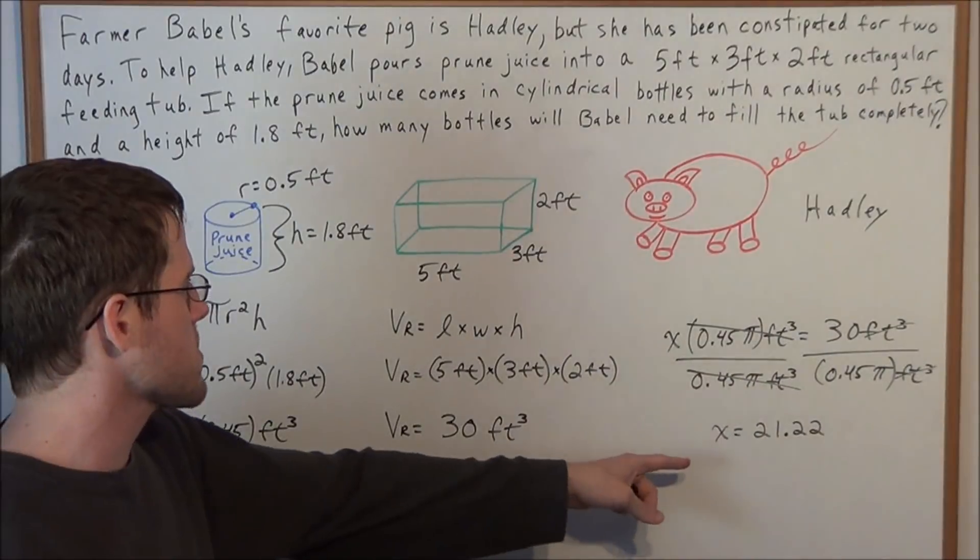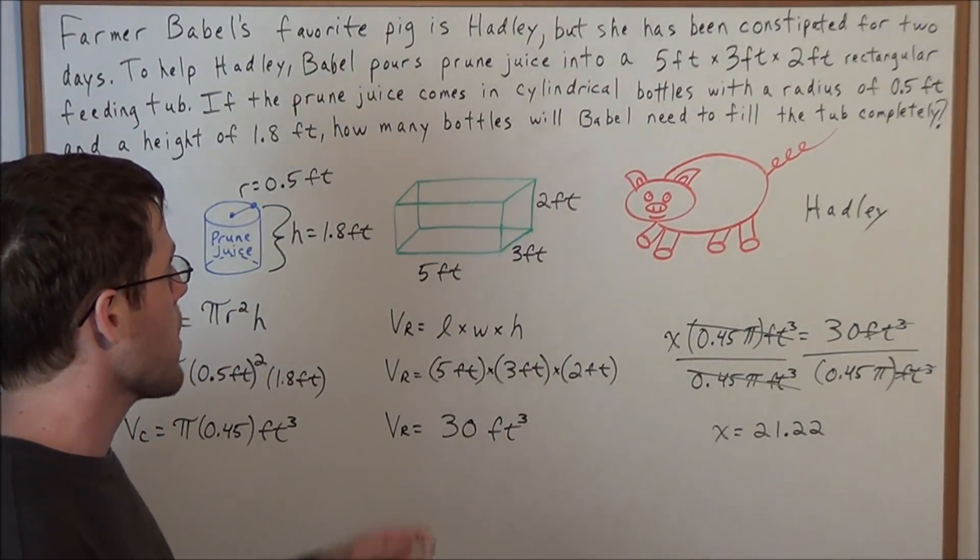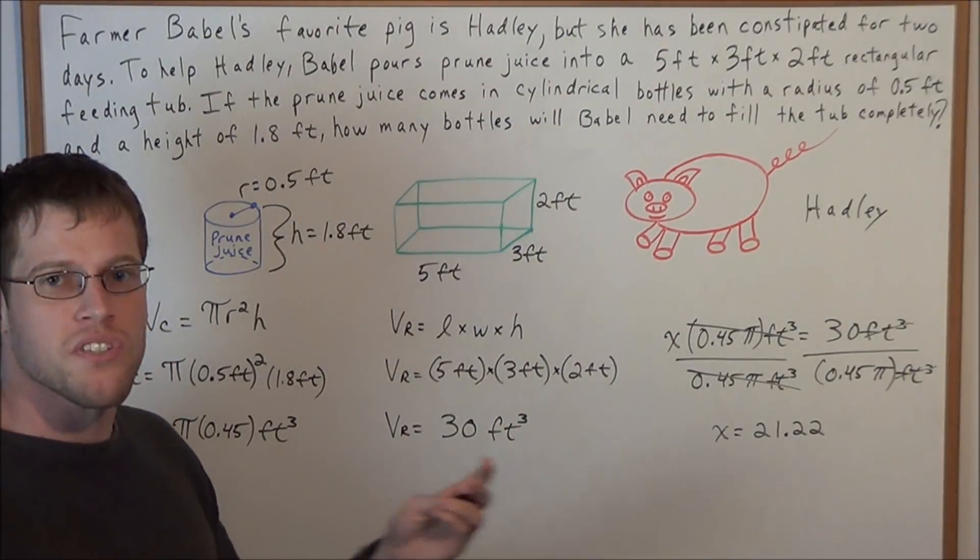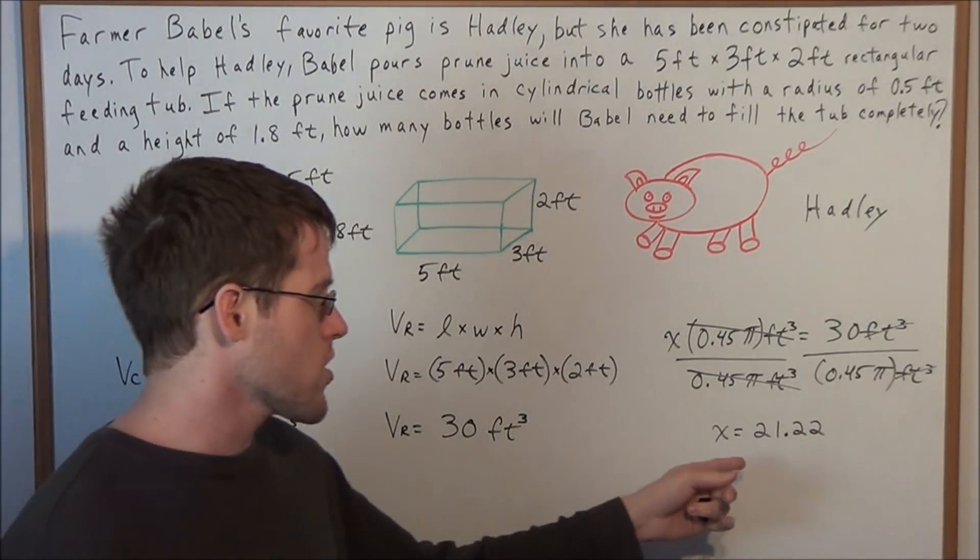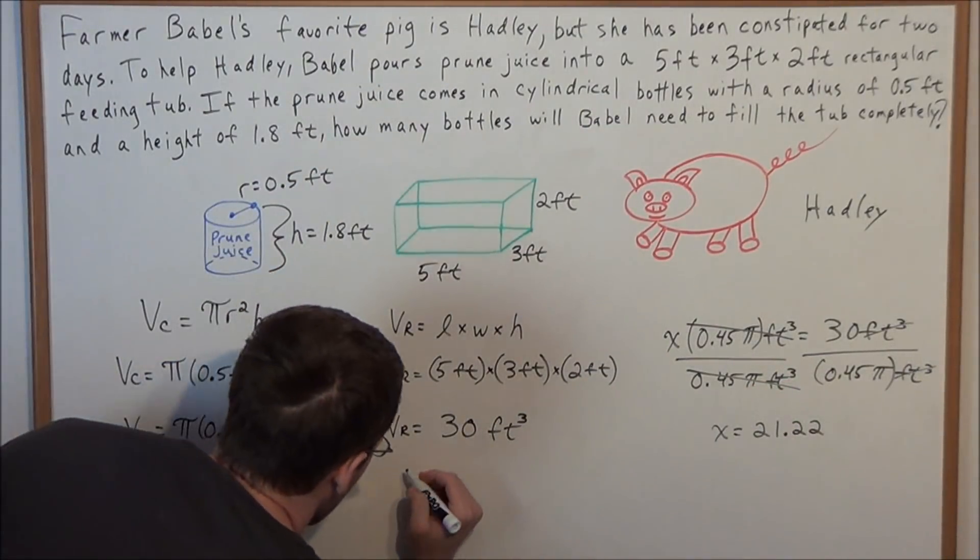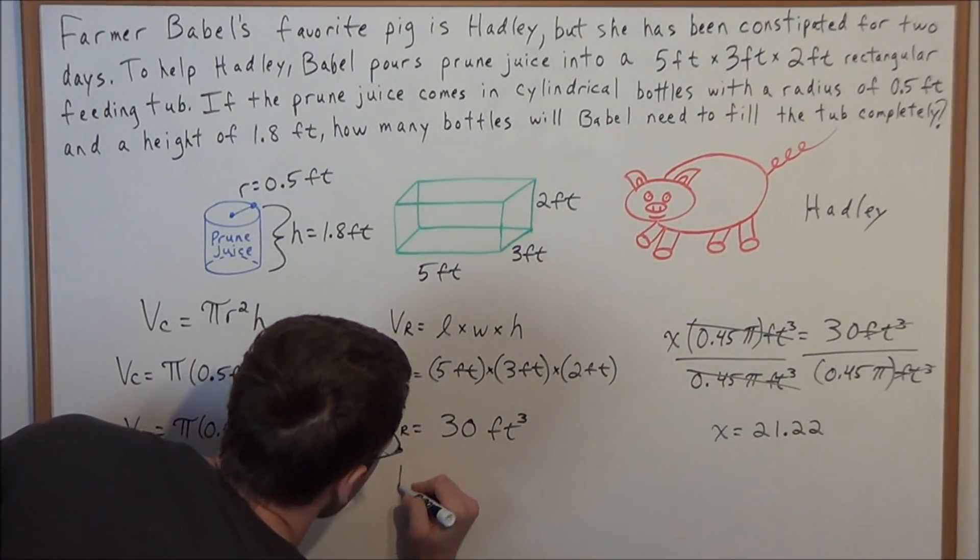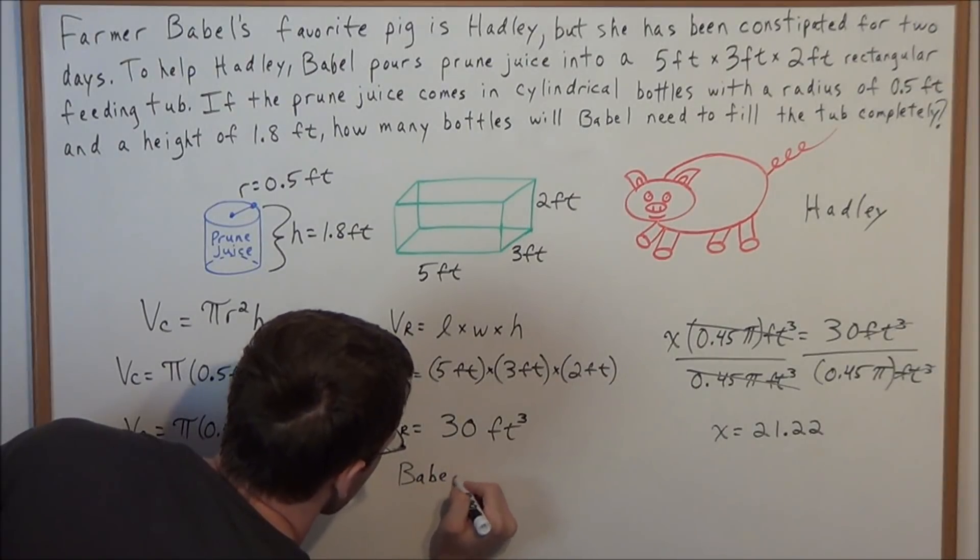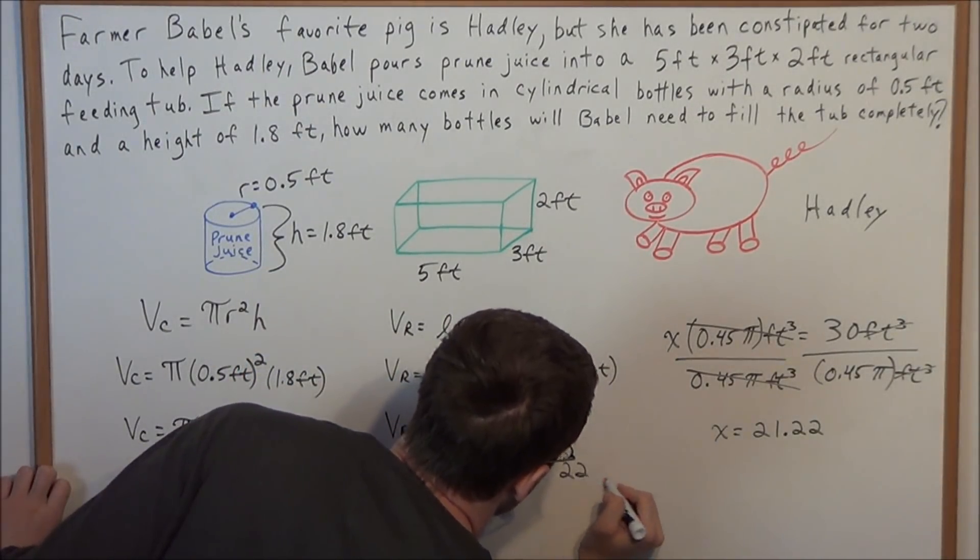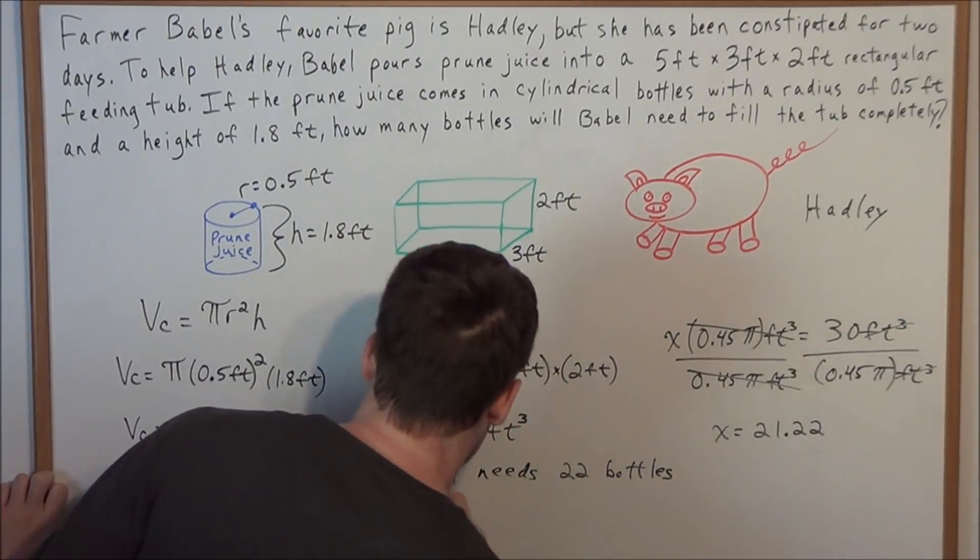So now how do we interpret this answer? x equals 21.22. How many bottles will Babel need to fill the tub completely? Well, assuming he's going to a cellar to grab these bottles, he's not going to grab 21 bottles and a fraction of a bottle. So the full answer to this is going to be Babel needs 22 bottles, because we can't have a fraction of a bottle.